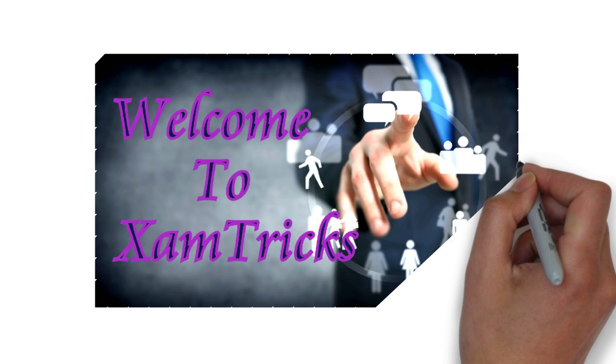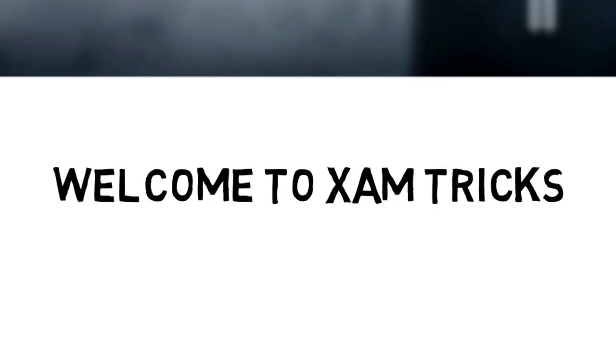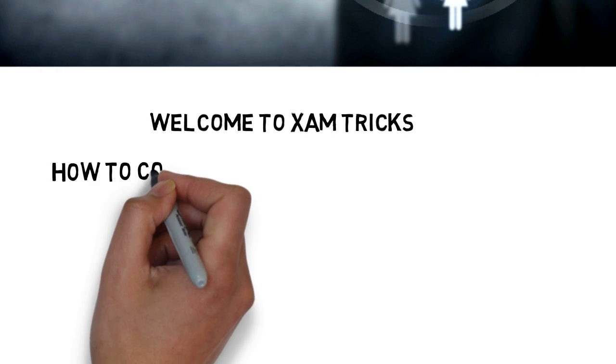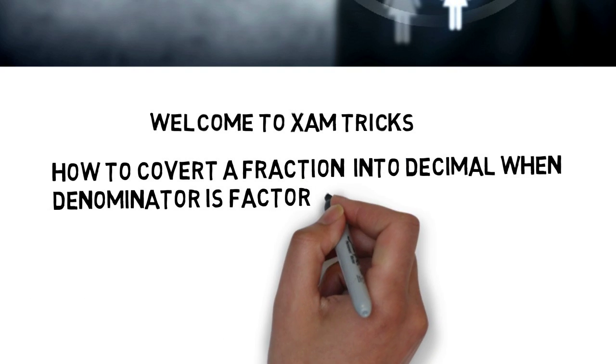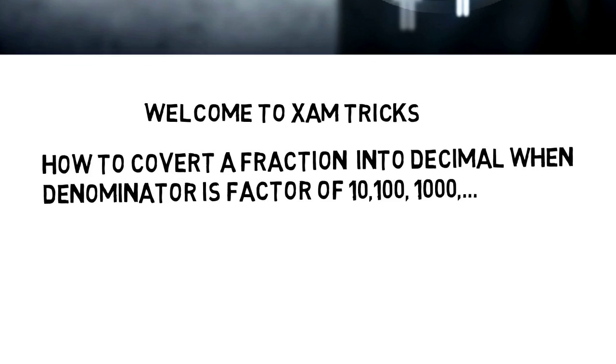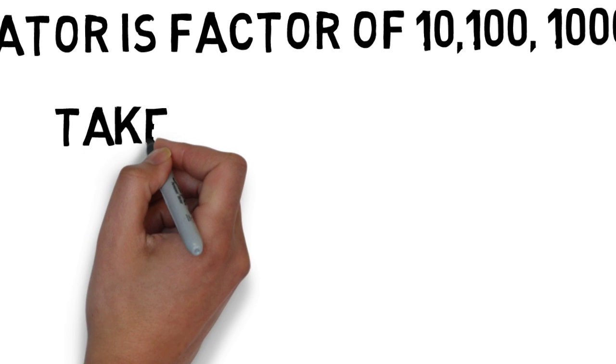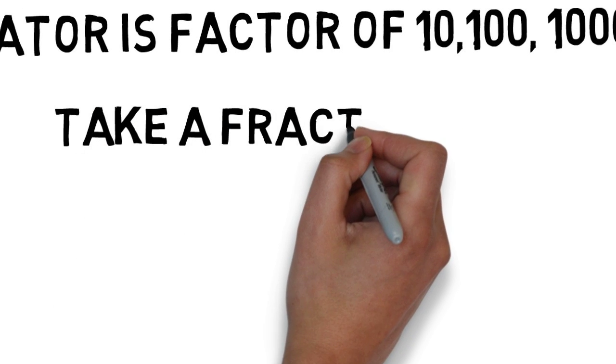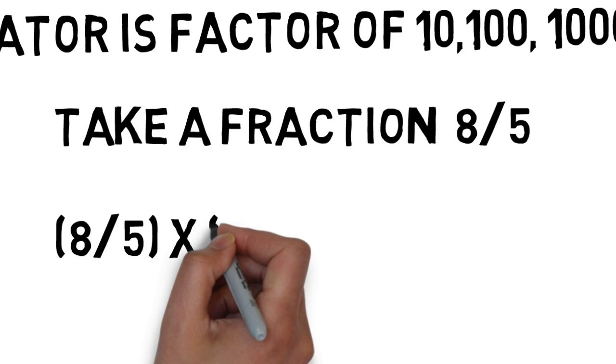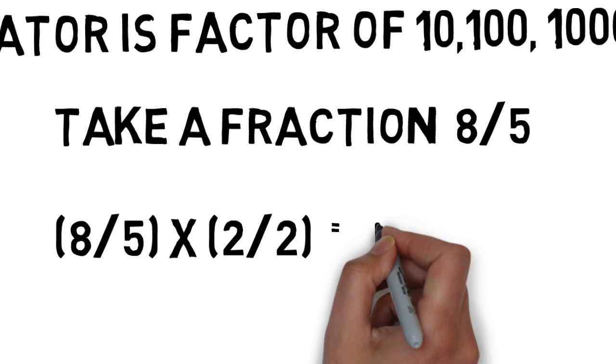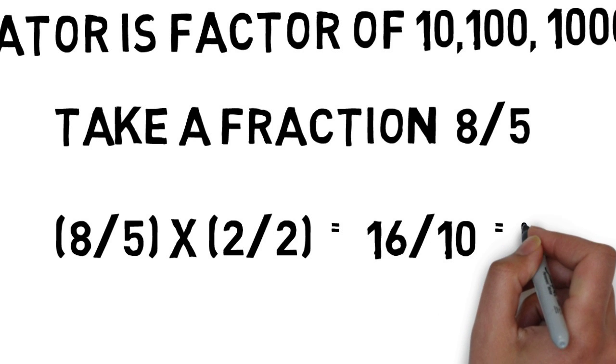Hey guys, welcome to Exam Tricks. Today we will learn to convert fractions into decimals with denominator a factor of 10, 100, and 1000. Let us take an example: 8/5. First step is to make the denominator 10, 100, 1000, whichever is nearer. So 8/5 becomes (8/5) × (2/2), which equals